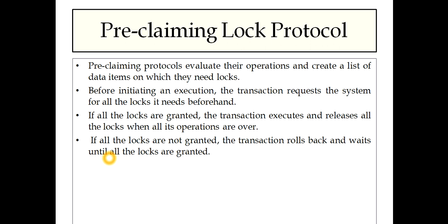First, create a list of data items on which they need locks. Then, before initiating the execution, the transaction requests the system for all the locks it needs from that list. The transaction will have an idea of what data items require locks. If all the locks are granted, the transaction executes and releases all the locks after all operations are over. If not, the transaction rolls back to its initial condition and waits until all the locks are granted.